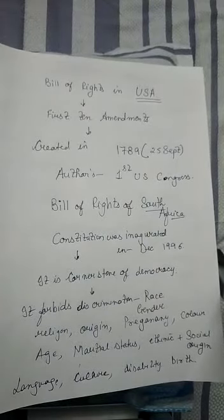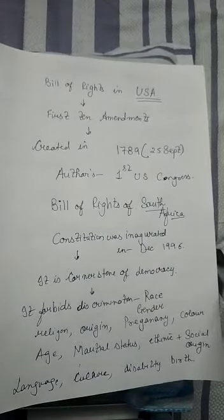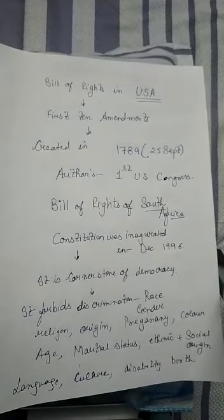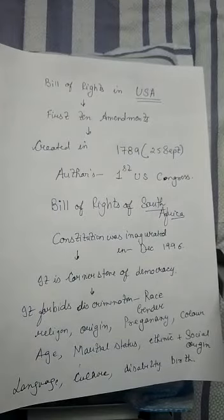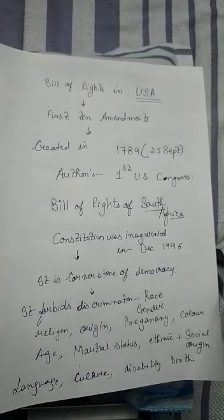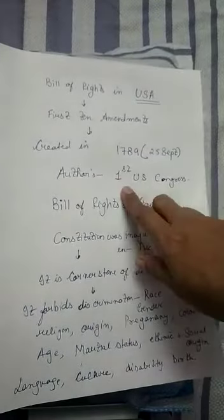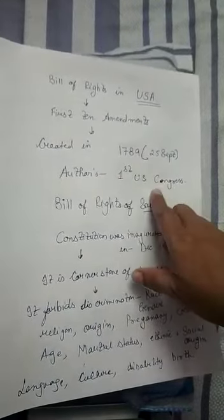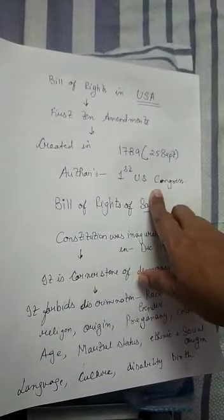In Bill of Rights jo USA mein aaya tha, woh koi ek person nahi tha - United States ki Congress thi. United States mein jo Congress hai, woh koi political party ka naam nahi hai, woh law making organization ka naam hai. U.S. Congress is a law making organization.